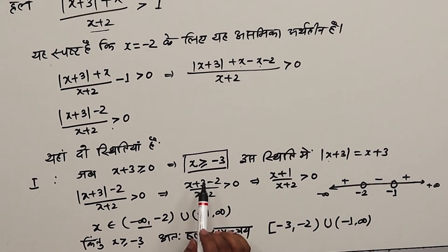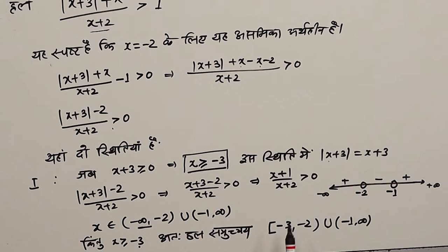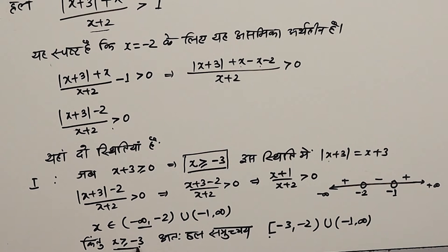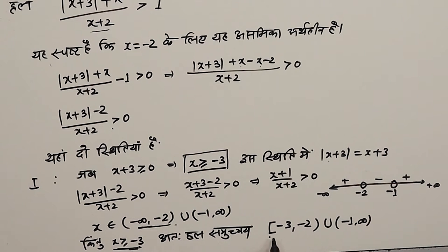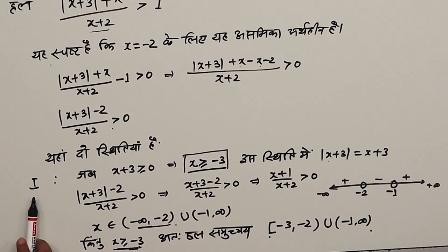To confirm: x is greater than or equal to minus 3. The result involves a closed interval and an open interval. Taking the intersection of the two conditions, both are fulfilled, giving us the result for Case 1. Now we move on to Case 2.